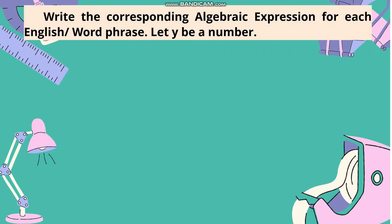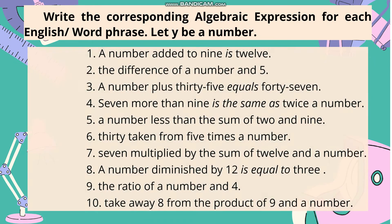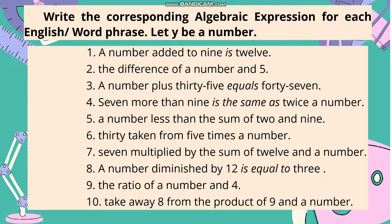Write the corresponding algebraic expression for each word phrase. Let y be a number. Number 1: 'A number added to 9 is 12.' Answer: 9 plus y equals 12. Number 2: 'The difference of a number and 5.' Answer: y minus 5. Number 3: 'A number plus 35 equals 47.' Answer: y plus 35 equals 47. Number 4: '7 more than 9 is the same as twice a number.' Answer: 9 plus 7 equals 2y.